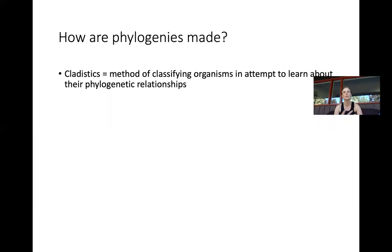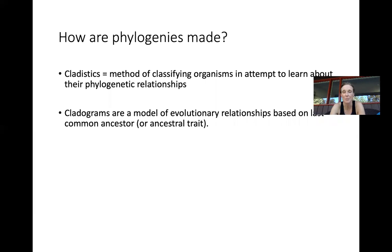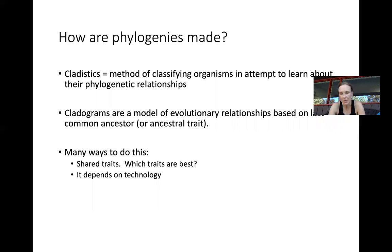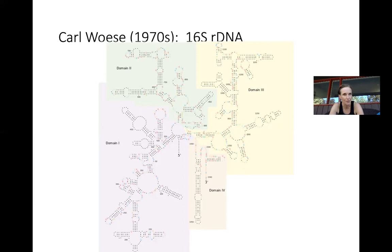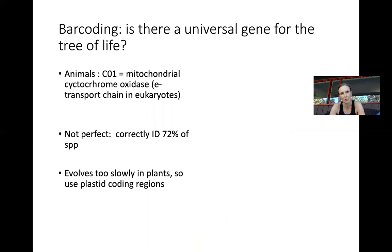Cladistics is a method of classifying organisms in an attempt to learn the phylogenetic relationships, and we make cladograms based on evolutionary relationships. There are many ways to do this involving analyzing shared traits — morphological traits like beak size or number of petals, or you can use DNA. DNA is by far the most popular. Carl Woese in the 1970s was the first person to realize that ribosomal DNA was really good at resolving these deep evolutionary relationships, and ever since then we've been using DNA to resolve most phylogenetic relationships.